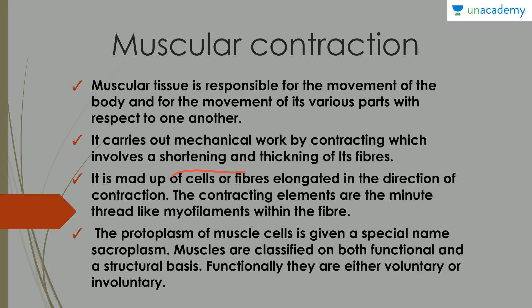Muscle tissue is made up of cells or fibers elongated in the direction of contraction, and the contracting elements are the minute thread-like myofilaments within the fiber. The protoplasm of the muscle cells is given a special name — sarcoplasm — and muscles are classified on both a functional and structural basis.